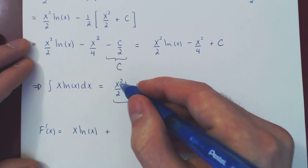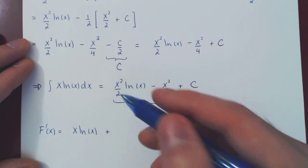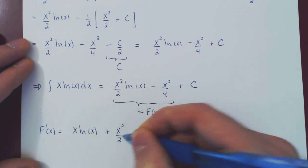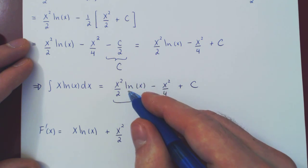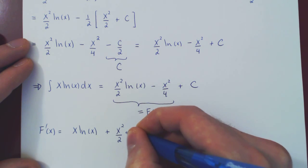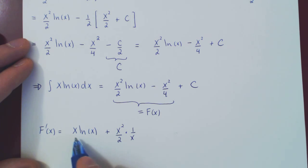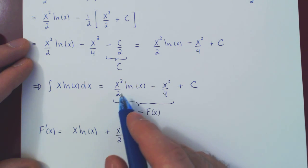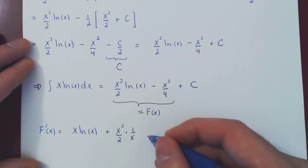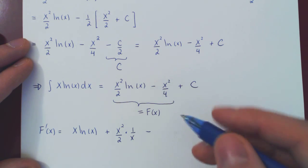Plus, by the product rule, the first function, x squared over 2, times the derivative of the second function, which is 1 over x. So this is the derivative of x squared over 2 ln of x from the product rule, minus, of course, the derivative of this function. So negative 2x over 4 from the power rule.